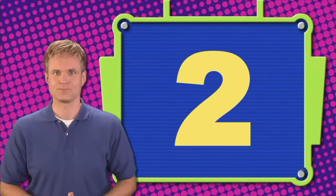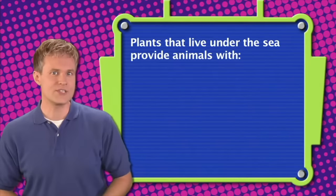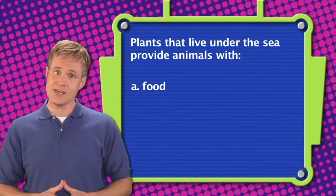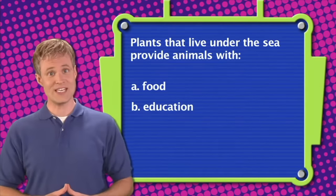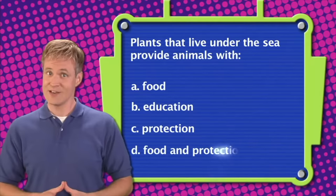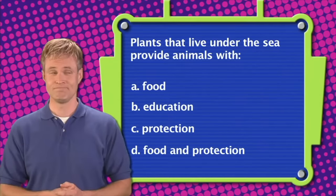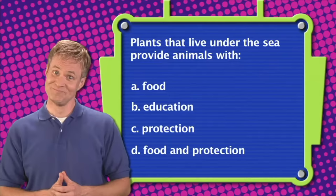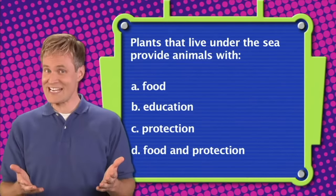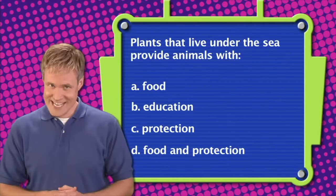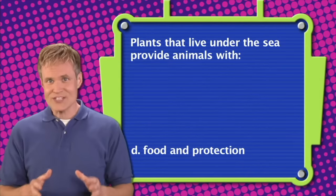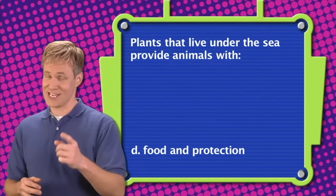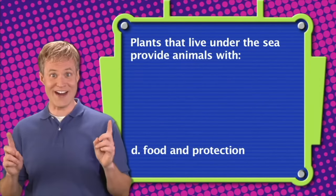Here's the next question. Plants that live under the sea provide animals with: A. Food. B. Education. C. Protection. D. Food and protection. The correct answer is D. Plants that live under the sea provide animals with food and protection. Thank you for playing Know Your Water Habitat.